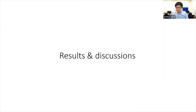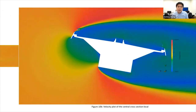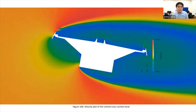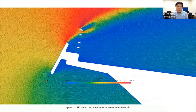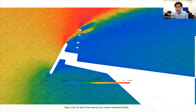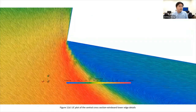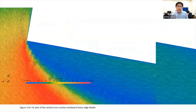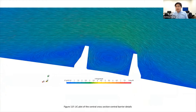Now let's see some results. This is a velocity plot on a cross-section of the full domain, and a closer view. This uses the line integral convolution representation to illustrate air circulations around the bridge deck sections. We can see closer views of the upper windward side, the upper leeward side, the lower windward side, the lower leeward side, and finally the area around the central barrier.